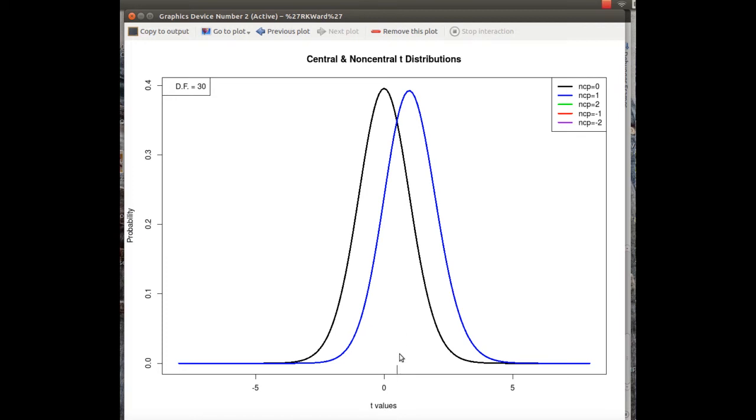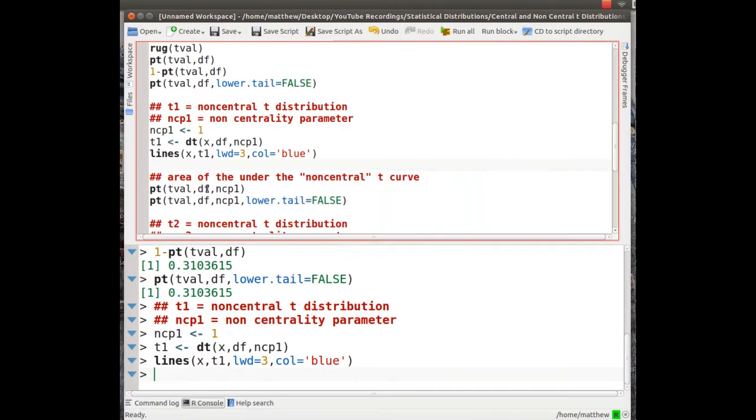So here let's calculate the area under the curve from this noncentral t-distribution. That's not a lot of area, so we'd expect not a big value. Here we use the same pt function in R, that's the distribution function of t. We calculate from a specific value here, that's 0.5 degrees of freedom 30, and we use our non-centrality parameter of 1. That's another parameter in the function.